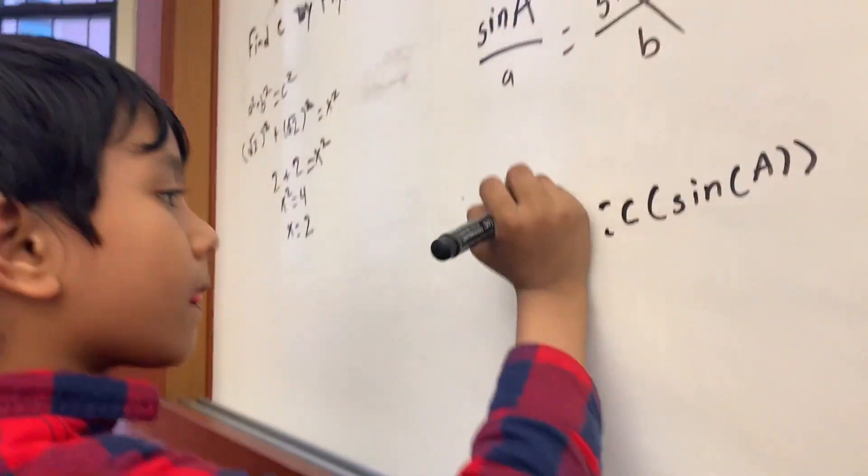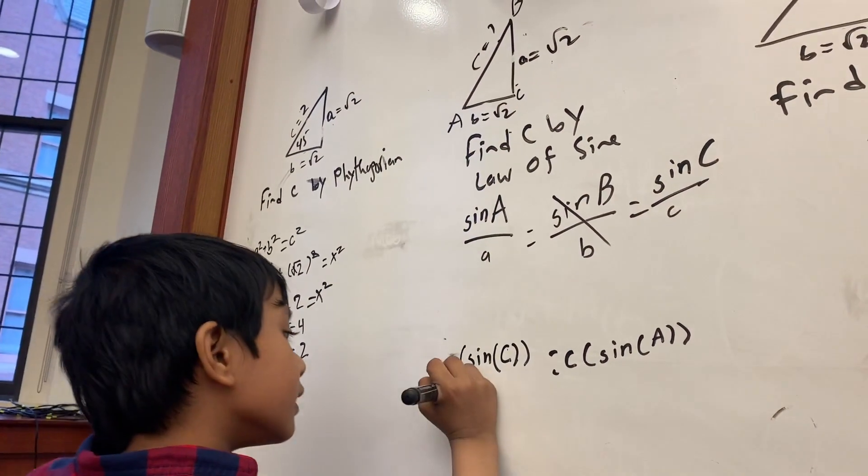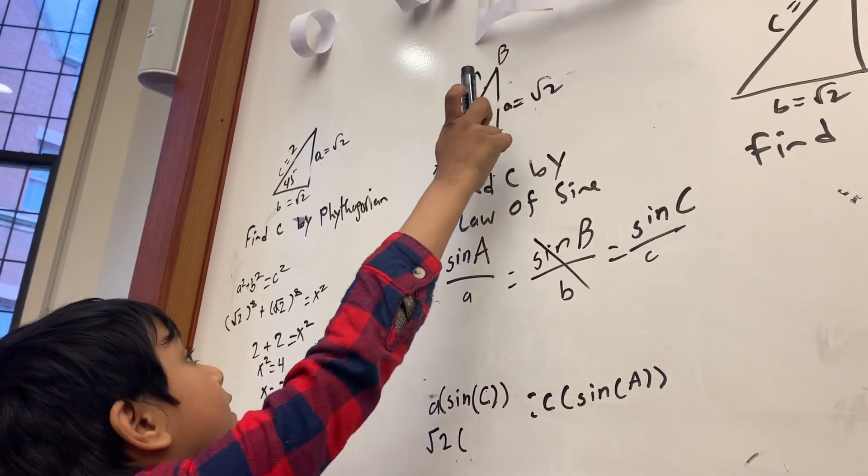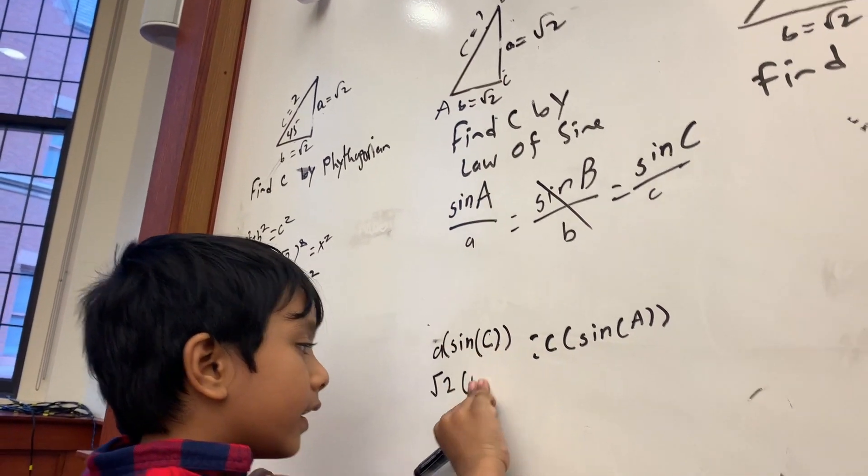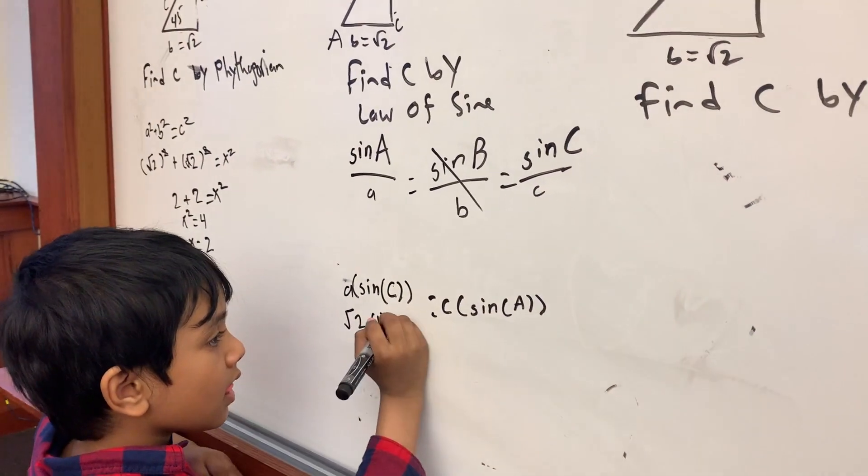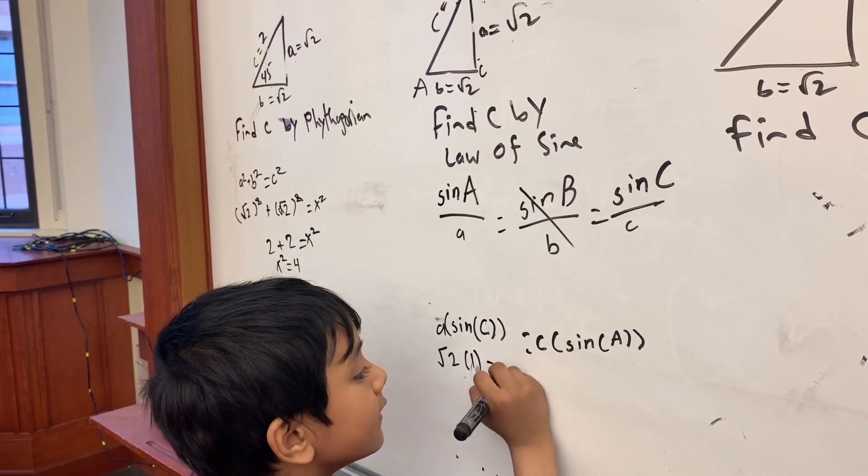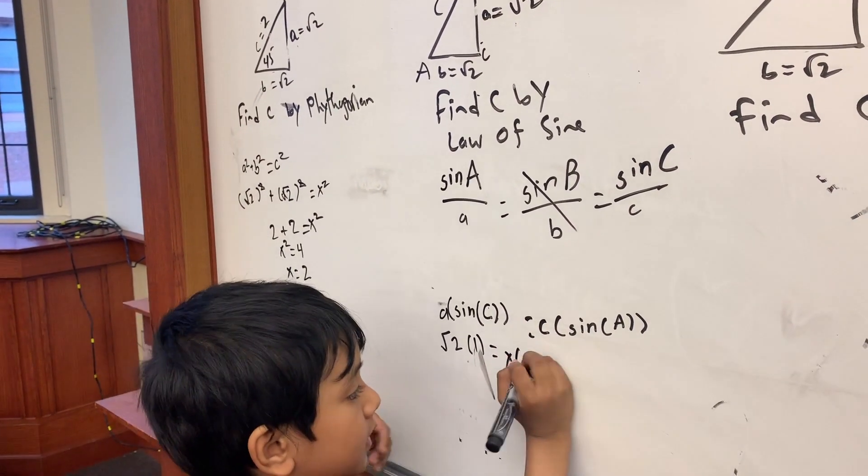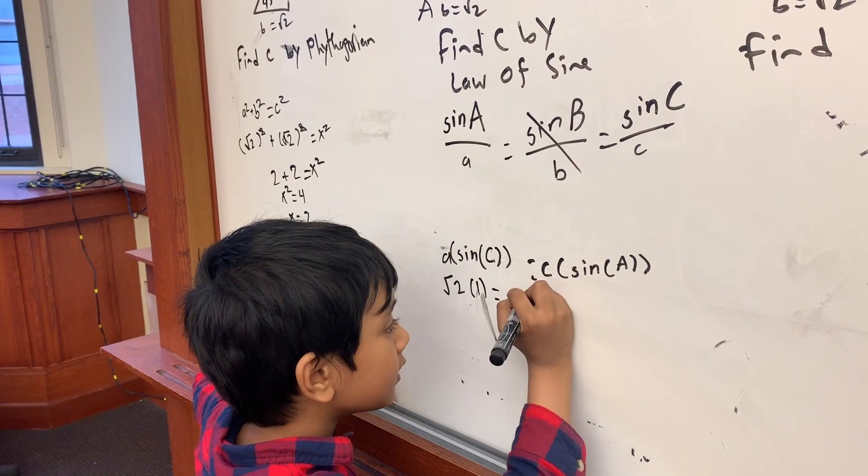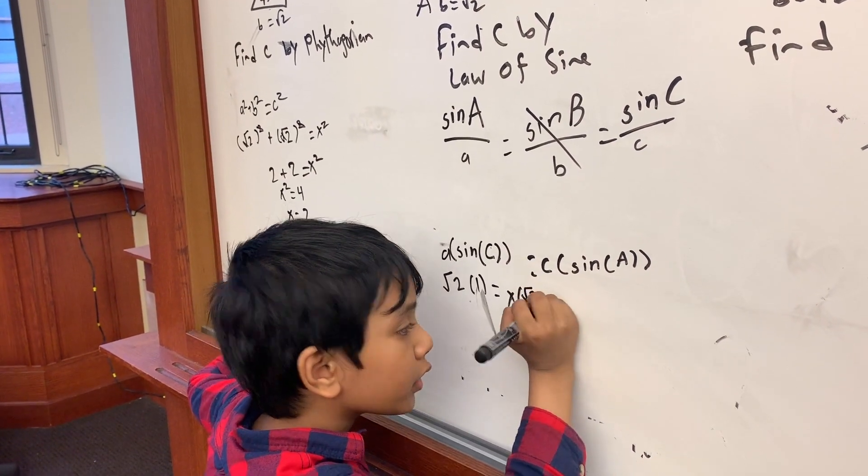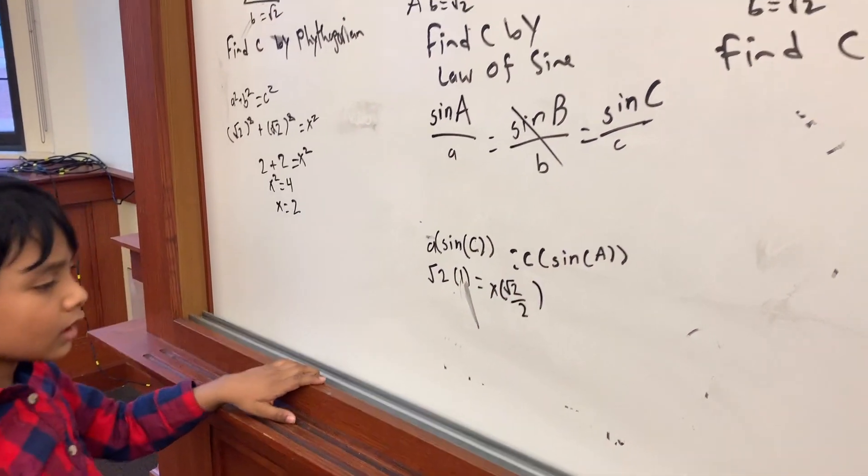So this A is root 2. So it's sine C, that means sine 90 degrees for C. So that's sine 90 and sine 90 is 1. Equals, C we don't know, so let's just use x. Sine A, so that's sine 45, which is root 2 over 2, I believe.